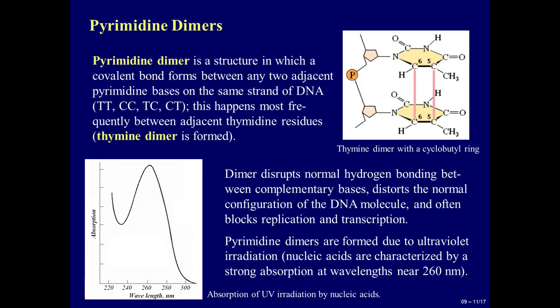Pyrimidine dimers. A pyrimidine dimer is a structure in which a covalent bond forms between any two adjacent pyrimidine bases on the same strand of DNA: TT, CC, TC, or CT. This happens most frequently between adjacent thymidine residues, forming a thymidine dimer. In the picture to the right, we can find the formation of a thymidine dimer with a cyclobutyl ring. The dimer disrupts normal hydrogen bonding between complementary bases, distorts the normal configuration of the DNA molecule, and often blocks replication and transcription.